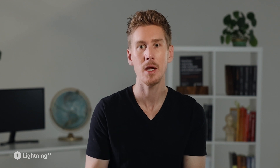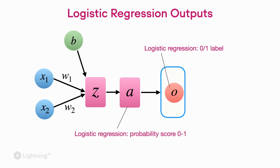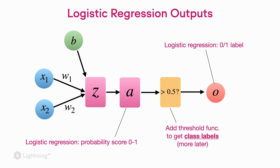In the upcoming videos, we will discuss this more closely. But as a sneak peek, the logistic regression activation function outputs a probability score between 0 and 1. There is also a threshold function which checks whether the probability score is greater than 0.5 or not. If it's greater than 0.5, the model outputs class label 1; if it's smaller or equal to 0.5, it outputs class label 0. We will be diving into this in more detail in the upcoming videos.